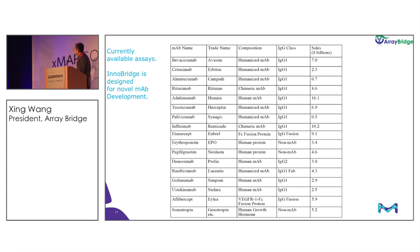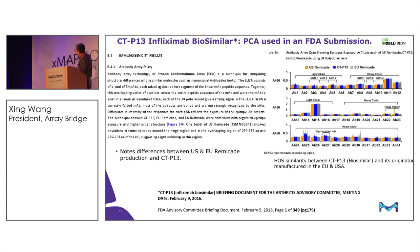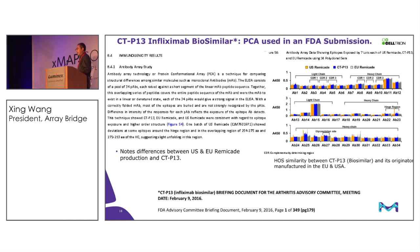Here are the current products available for the majority of biosimilars that different companies are working on, and there is also one array developed for new mAb development. Here is a publication from Celltrion — a biosimilar developer from Korea that had the first biosimilar approved in the world, first in Europe and then in the US. In their application, they used PCA data for the filing and eventual approval for Remsima, and also used similar data for Herceptin and Rituximab biosimilar filings.